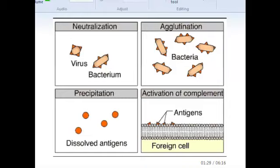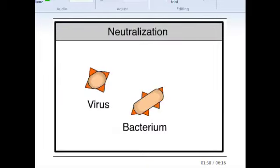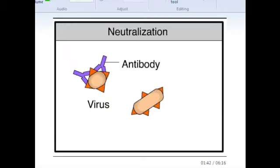Neutralization occurs when antibodies bind to antigens, blocking their activity and making them harmless. For example, antibodies cover the surface proteins of this virus, preventing it from hooking up with a host cell.